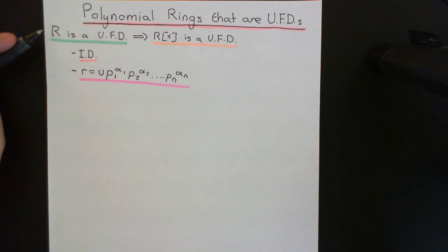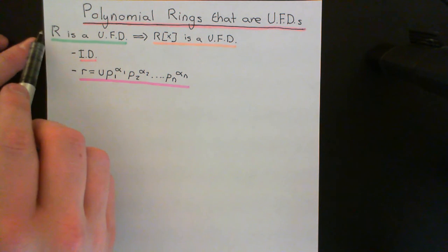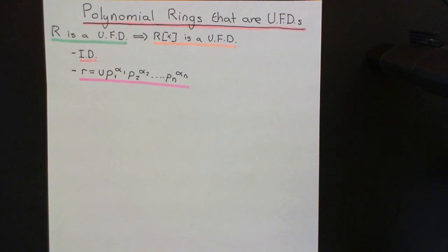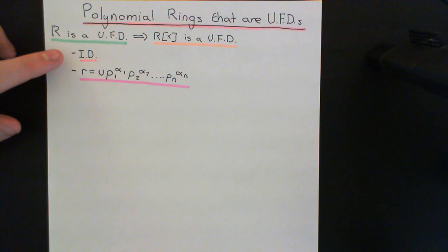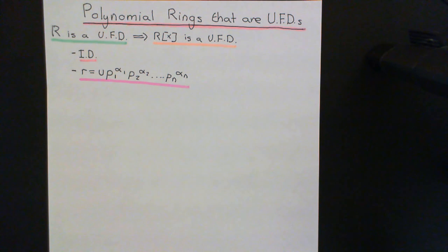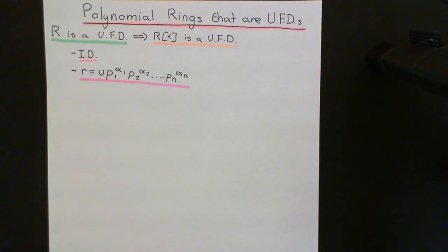We're assuming that these two things — existence and uniqueness of factorization — are true in our starting ring R, and what we want to prove is that this polynomial ring R adjoin X is also a unique factorization domain. The first bit is easy: we know that whenever we take the ring of polynomials over an integral domain, the answer is always an integral domain. So R adjoin X is going to be an integral domain. What we now need to prove is that all non-zero elements have a factorization into irreducibles, and secondly that this factorization is unique up to associates.